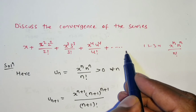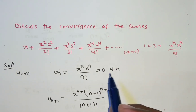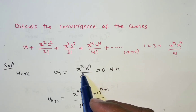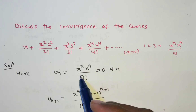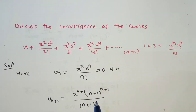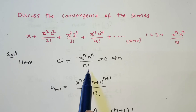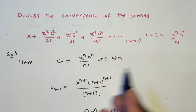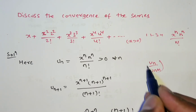Since in the given series x is greater than 0, and n is a natural number greater than 0, both numerator and denominator are positive, so uₙ > 0 and the series is a series of positive terms. Since it contains factorial, we apply the ratio test, which requires finding uₙ/uₙ₊₁.